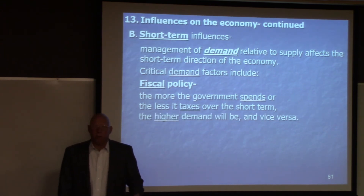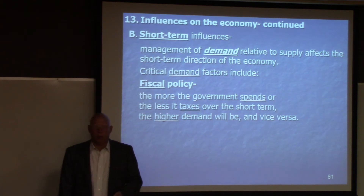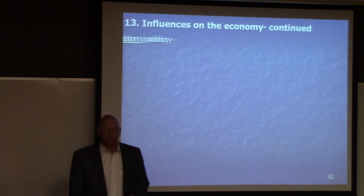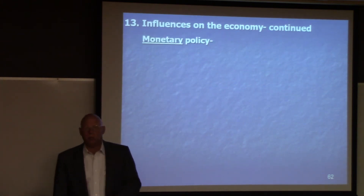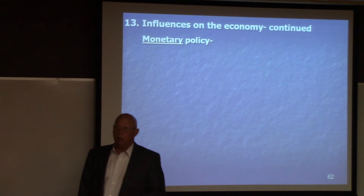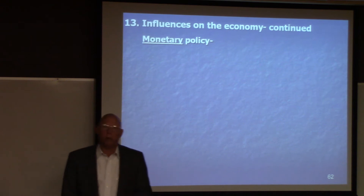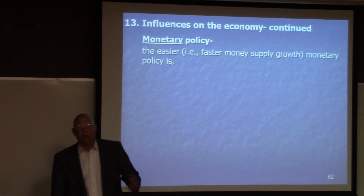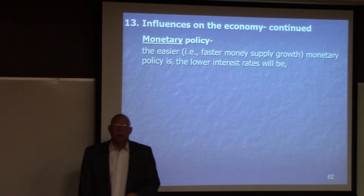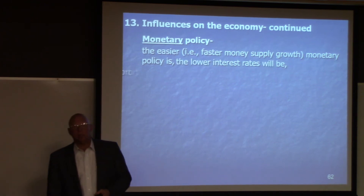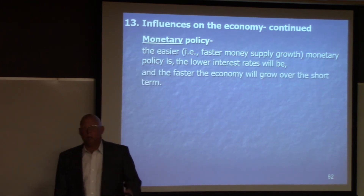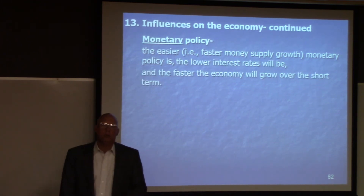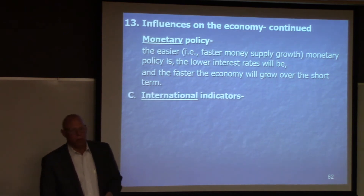If people have more money, hopefully they'll spend. If not, the government will have to step in and spend. So taxing and spending — fiscal policy — is one lever. Then we have monetary policy: faster money supply growth cuts interest rates, and people tend to borrow and spend.